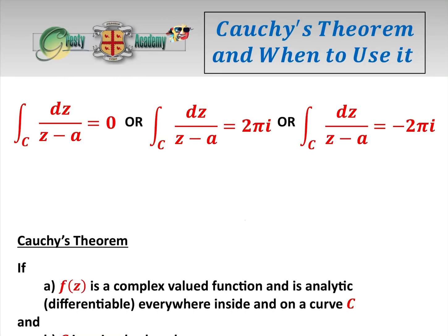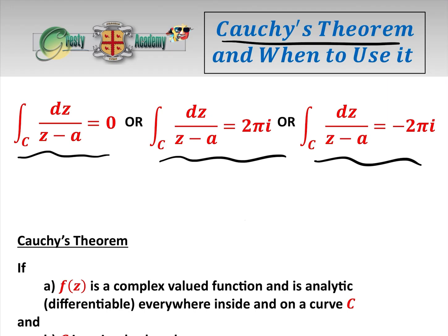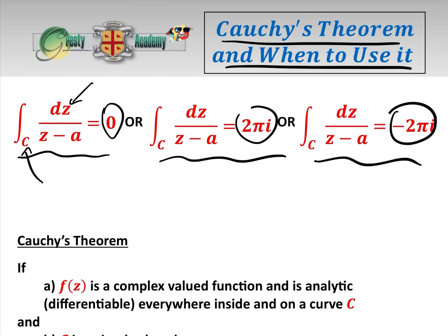In the thumbnail to this video we ask which one of these three integrals is correct, and it turns out all of them are correct — it depends on the circumstance, as we are going to explain in this video. The video is entitled Cauchy's Theorem and when to use it. We have the integral of dz over z minus a around a curve C; it either equals zero, equals two pi i, or equals minus two pi i, depending on circumstance.